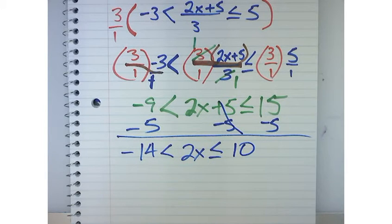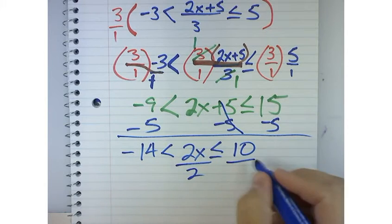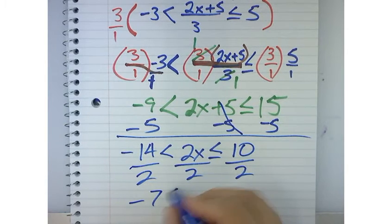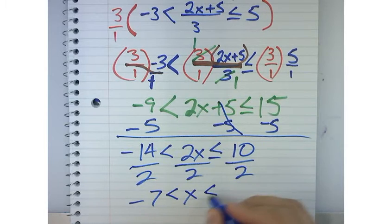All right. So 2x means what? Well, that's what we do. But what does 2x mean? 2 times x. So to move the 2, we do the inverse operation, which is divide. So we're going to divide everything by 2. And I get negative 7 is less than x is less than or equal to 5.